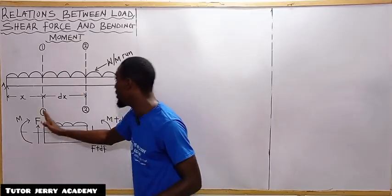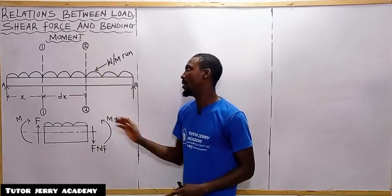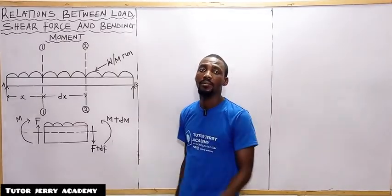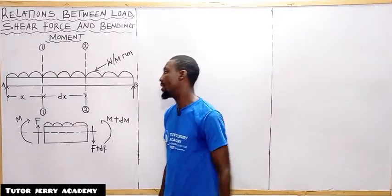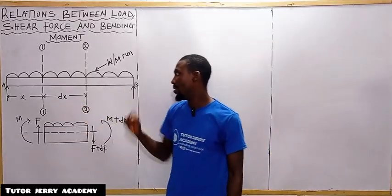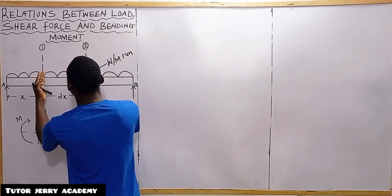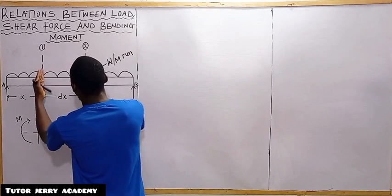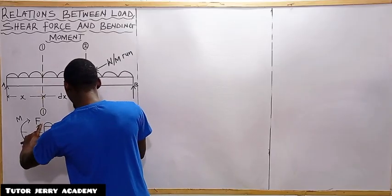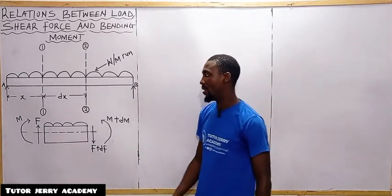The beam AB carries a uniform distributed load W per unit run and is sectioned at section 1 and section 2. The beam is at a distance S from the left-hand side and is of length ds. We want to consider this portion of the beam — we section out this part.